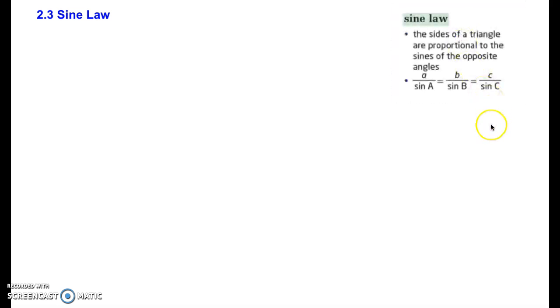Hi everybody, tonight we're going to be going over 2.3 which is the sine law. For most of you this should be a review from last semester, so we won't have to take too much time to go over it. Just recall the sine law as side A over sine A equals B over sine B and that equals C over sine C. Depending on whether we're solving for an angle or a side we can flip the denominator and the numerator around, so we could have sine A over A equals sine B over B equals sine C over C.